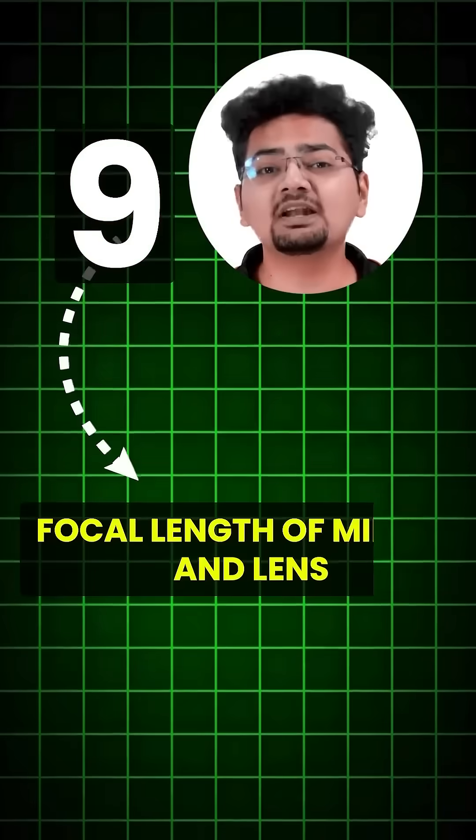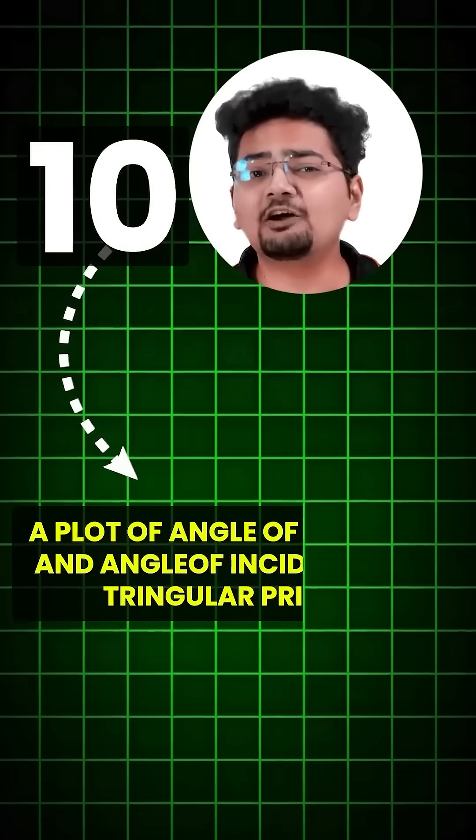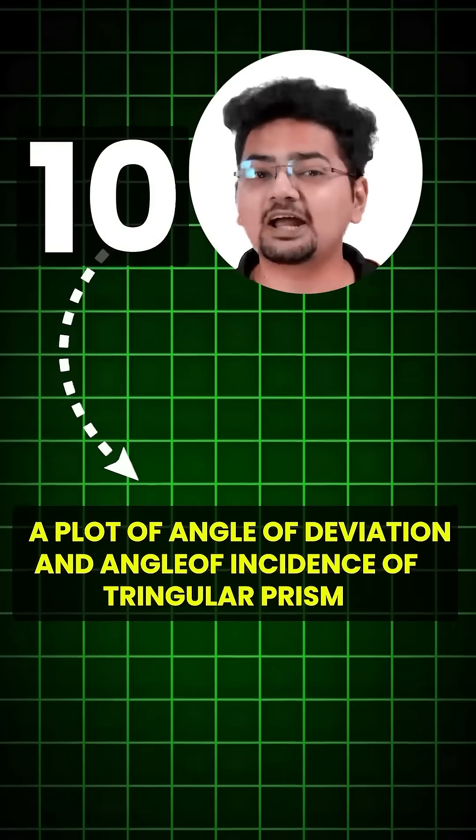Nine, Focal length of mirror and lenses. Tenth, Plot of angle of deviation and angle of incidence of a triangular prism.